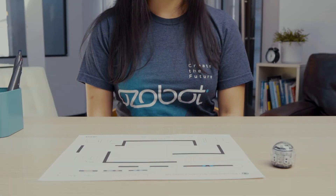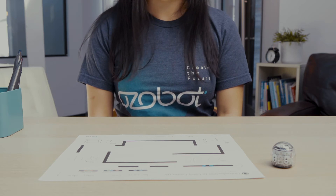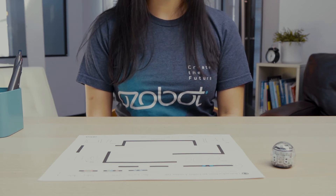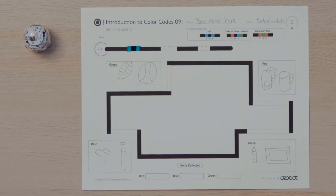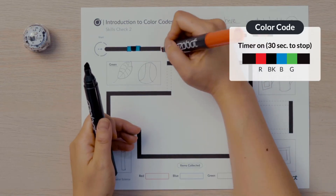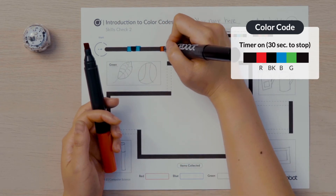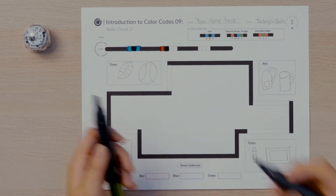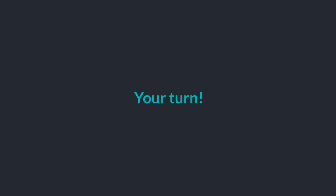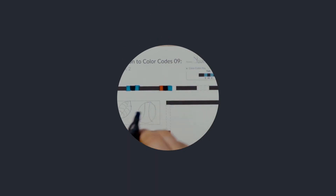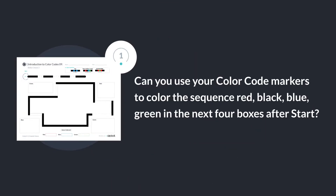Since Ozobot loves a challenge, it will only have 30 seconds to complete the scavenger hunt. After Ozobot begins to move fast, the 30-second timer should start. The second missing color code with four colors is the timer on. Find the timer on color code in the color codes key. I will put the color sequence red, black, blue, green in the next four empty boxes after start. Now it's your turn to program the timer. Can you use your color code markers to color the sequence red, black, blue, green in the next four boxes after start?